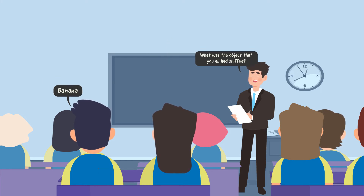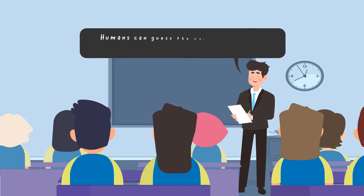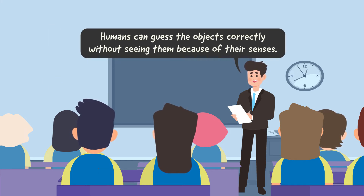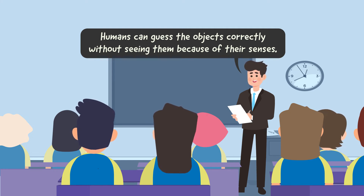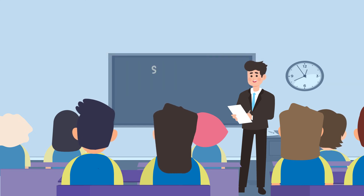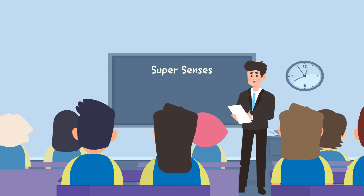Bingo! Tell the students that humans can guess objects correctly without seeing them, thanks to their senses — thus introducing them to the name of the lesson, which is Super Senses. Write the name of the chapter on the board. This is the first step in concept mapping.